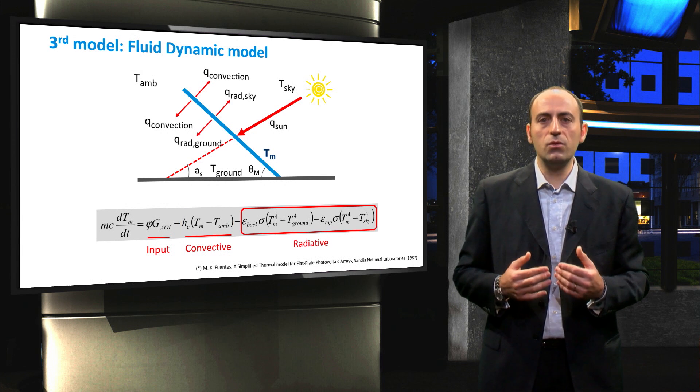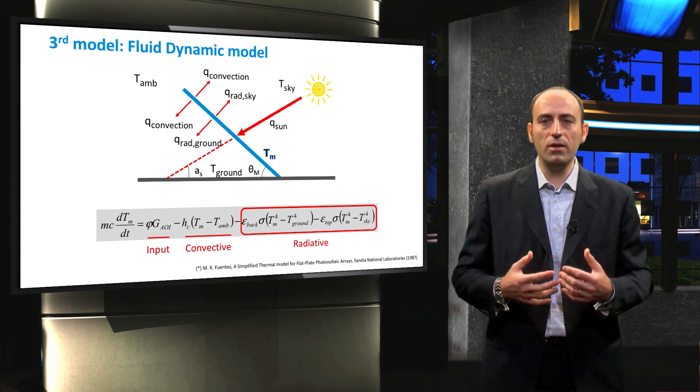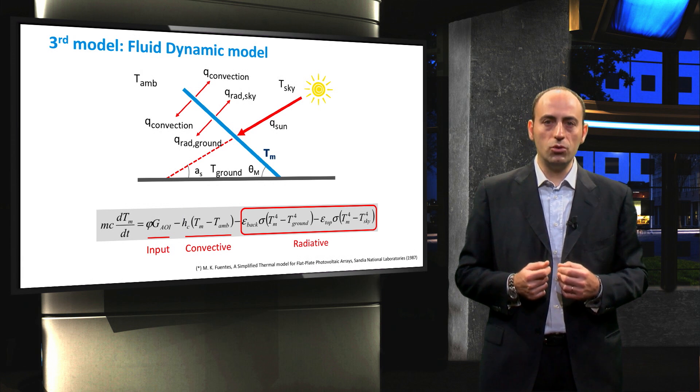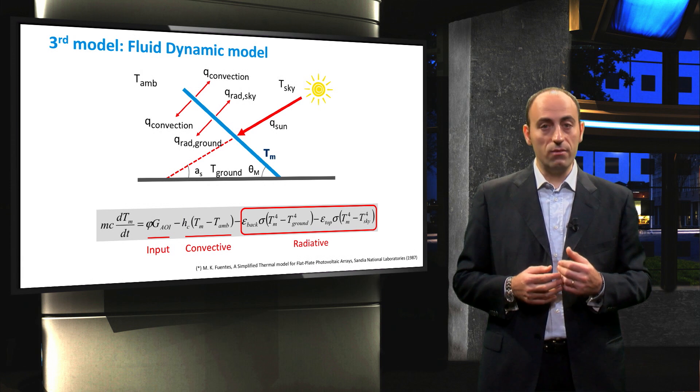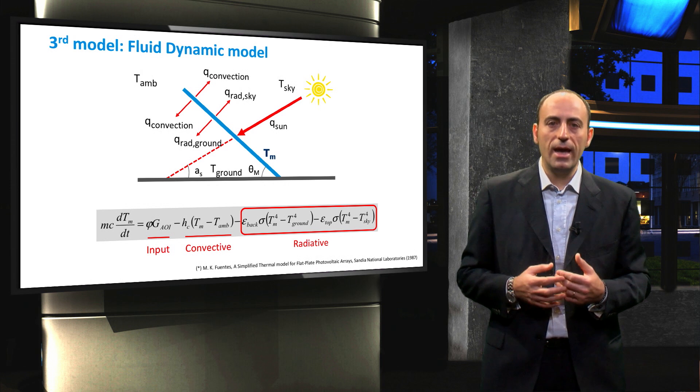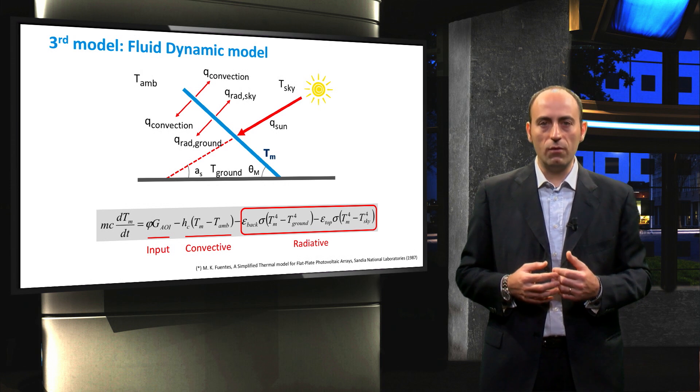Lastly, these two terms represent the radiative heat exchange between the rear surface and the ground, and between the upper module surface and the sky respectively. Here, E top is the emissivity of the module front glass, and E back is the emissivity of the back.